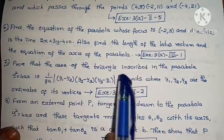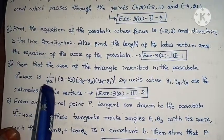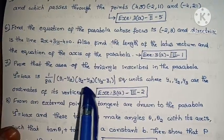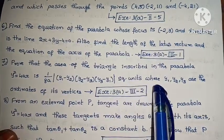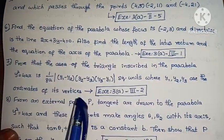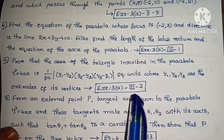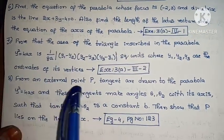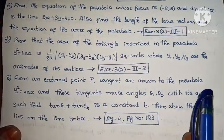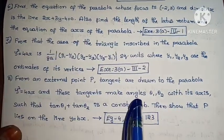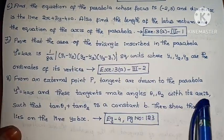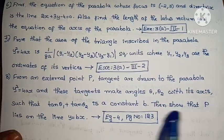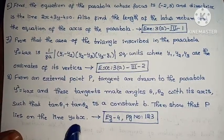Prove that the area of the triangle inscribed in the parabola y² = 4ax is (1/8a)|y₁ - y₂||y₂ - y₃||y₃ - y₁| square units, where y₁, y₂, y₃ are the ordinates of its vertices. Exercise 3, third roman, second problem. This is repeated many times in question papers, so it is very important. Next, from an external point P, tangents are drawn to the parabola y² = 4ax and these tangents make angles θ₁, θ₂ with its axis such that tan θ₁ + tan θ₂ is a constant b. Show that P lies on the line y = bx. Example 4, page number 123.